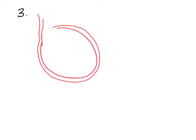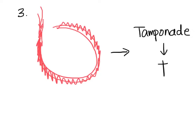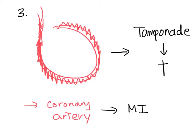The third problem for aortic dissection has to do with the heart. A dissection can propagate backwards and start bleeding into the pericardium. As time goes on, that can cause a cardiac tamponade, leading to death. Sometimes, the aortic dissection can dissect into the coronary arteries and cause myocardial infarction, although that's rare.